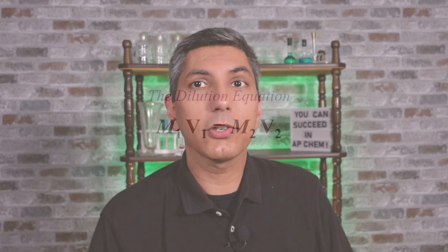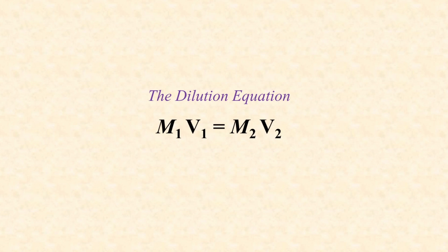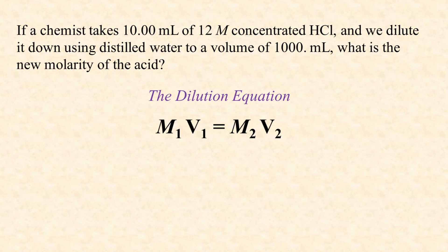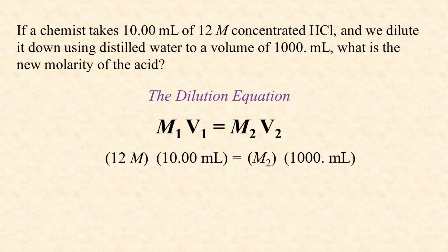Also in Unit 3 is a useful little equation I call the dilution equation. If you're trying to make a specific volume of a diluted solution, this equation tells you how much of the concentrated solution you need. For example, if we take 10 milliliters of 12 molar concentrated acid and dilute it down using distilled water to a volume of 1,000 milliliters, we can plug these numbers into the dilution equation and find that the new molarity of the acid will be 0.12 moles per liter. A very useful equation, and you aren't given this on the exam.